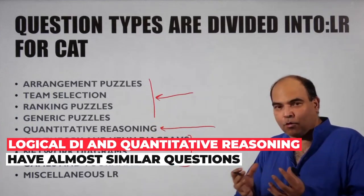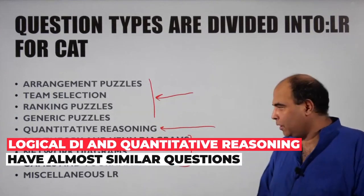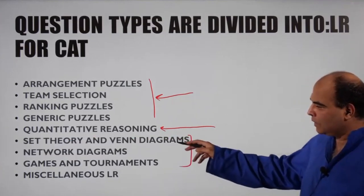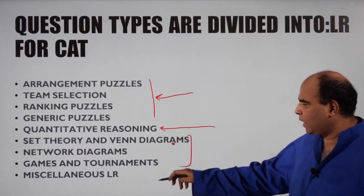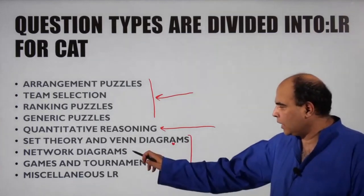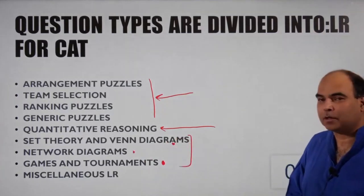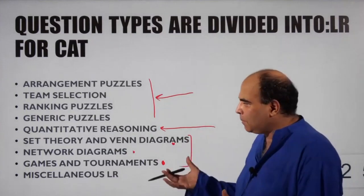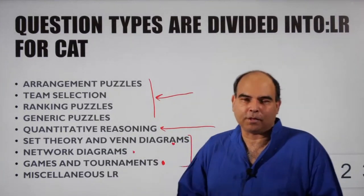When you're preparing logical DI and quantitative reasoning, you're more or less on two sides of the same coin. Then these chapters: set theory, very critical for LR for CAT; games and tournaments, very critical for LR for CAT; network diagrams, again very critical chapters. These eight chapters are the first block of chapters that you prepare.